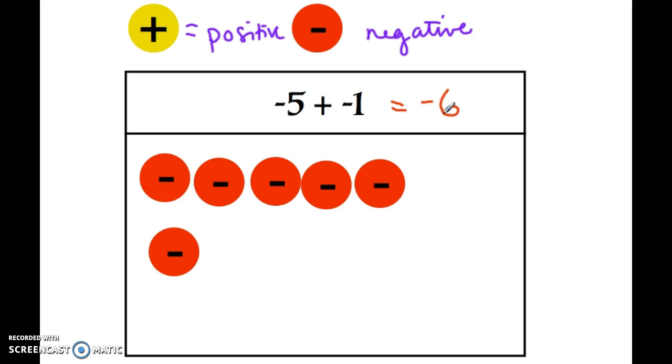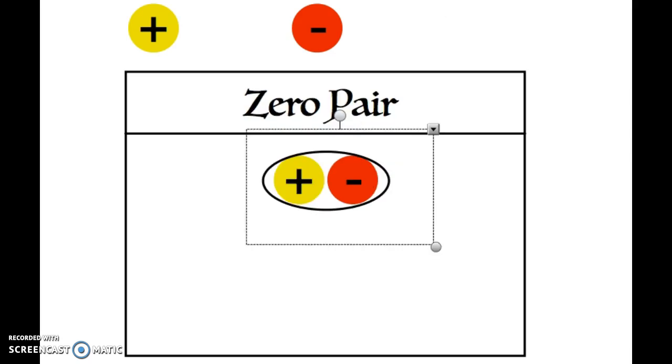Sometimes things get a little bit more complicated though, so I need to introduce you to this idea of a zero pair. You're going to notice that whenever you have a positive and a negative together, positive and negative are opposites. When you have positive 1 and negative 1 and you add them together, it's really important to know that positive 1 and negative 1 equals 0.